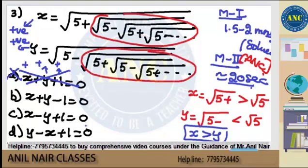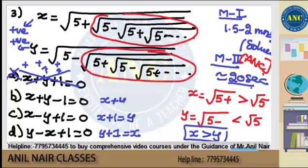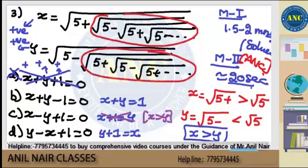Third option says x + 1 ≡ y, meaning y is greater than x. Fourth option says y + 1 ≡ x. Second option says x + y ≡ 1. Now, third option (x + 1 = y) implies y should be greater than x — but we established x is greater than y. So third option is eliminated.